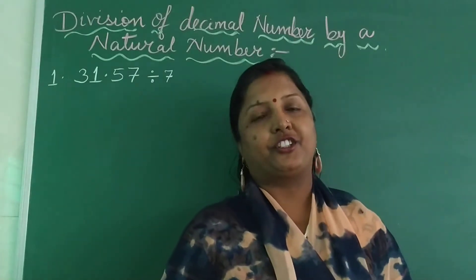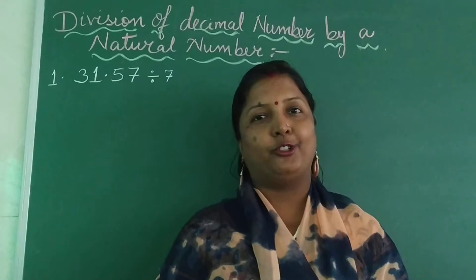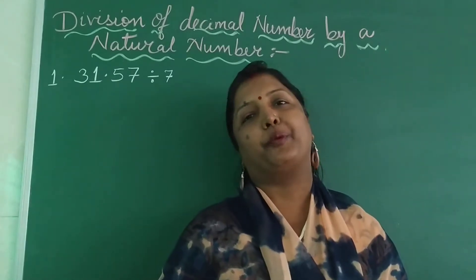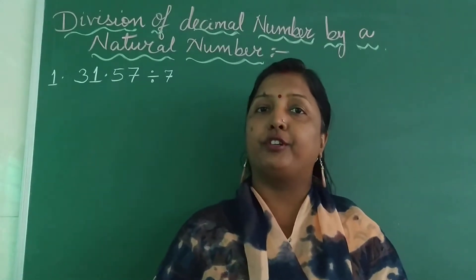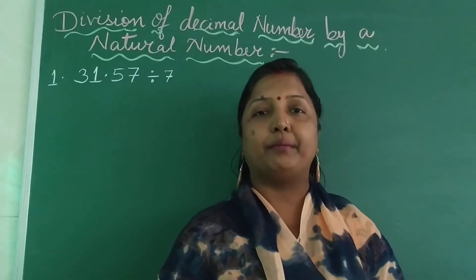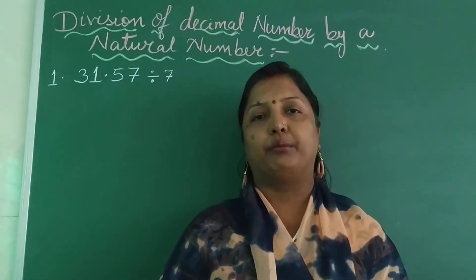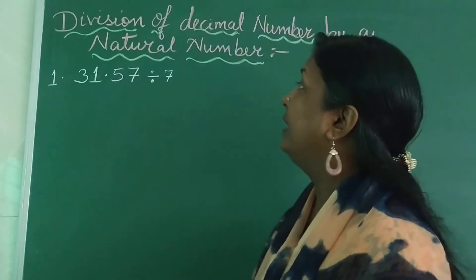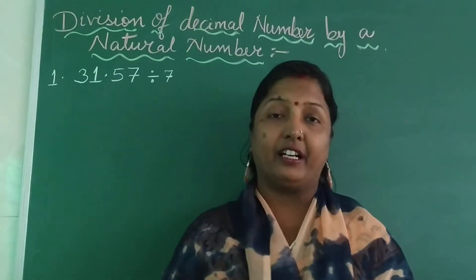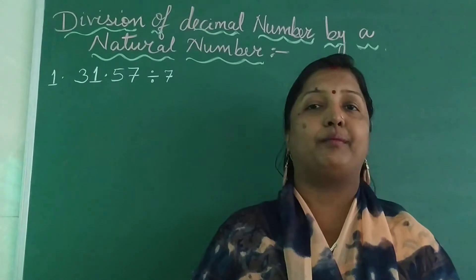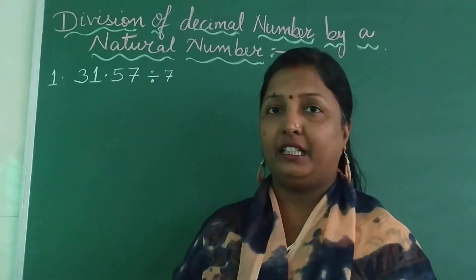So, multiplication, addition, subtraction are all done. The last operator that is left is division. Today we are going to do division of decimal numbers with natural numbers. I have taken an example: 31.57 divided by 7. Let us see how to divide a decimal number using a natural number.